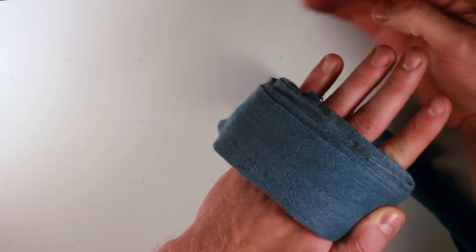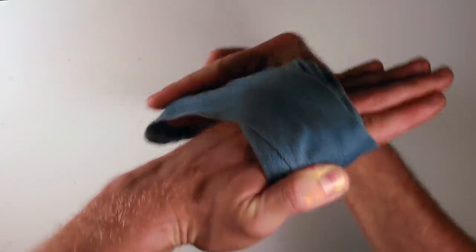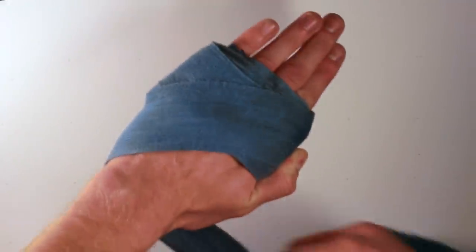As I do that, the leftover wrap is going to go away from the thumb and go around the hand one time. From here, it goes all the way down the back of my hand to my wrist.